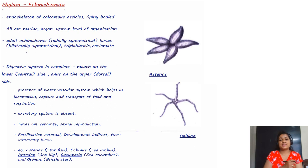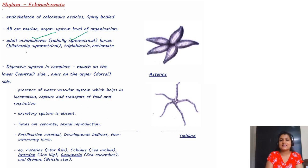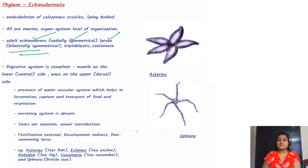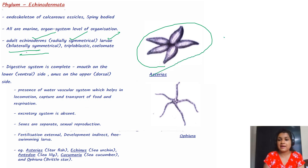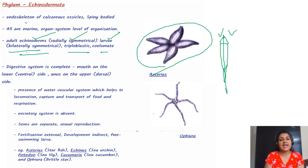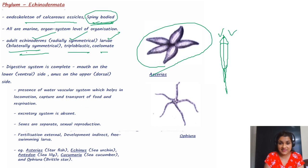Now let us come to Echinodermata. This is very important when teaching radial symmetry, because in Echinodermata the adults are radially symmetrical but the larvae are bilaterally symmetrical. They are triploblastic and coelomate. They have an endoskeleton of calcareous ossicles and spiny bodies — this is a characteristic feature.